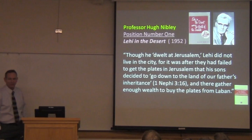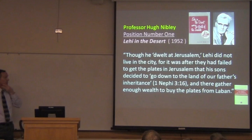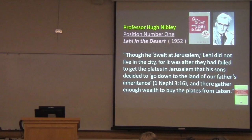He wrote a book in 1952 which encompassed some of the research that he had been doing on the Book of Mormon as a student of the Near East, called Lehi in the Desert and the World of the Jaredites. This was his first kind of position on the question of Lehi's residence. And this is what he says: 'Though he dwelled at Jerusalem' — using three words as a quote from 1 Nephi — Lehi did not live in the city.